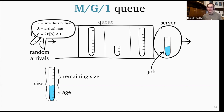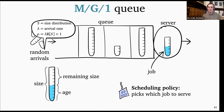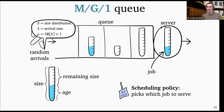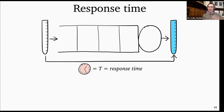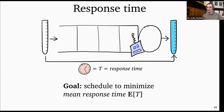We have jobs randomly arriving over time. The specific arrival process type is what M and G stand for. We have a general size distribution S — not necessarily just exponential — some arrival rate λ, giving system load ρ = λ·E[S]. Load has to be less than one for stability. We're studying scheduling today, so the scheduling policy picks at every moment in time which job to serve. We're specifically looking at preemptive scheduling, where we can at any moment switch which job is in service with no delay, loss of work, or other overhead.